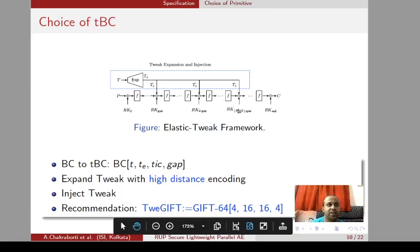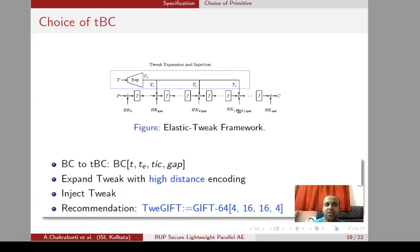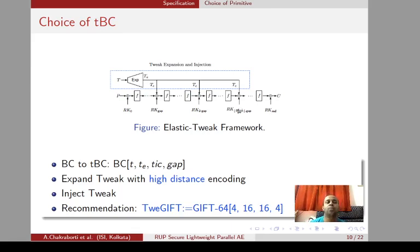Overall the structure is simple, but the main motivation is that we can be more confident in the security of the short-tweak TBC because we are using a well-known block cipher. We can use AES, GIFT, PRESENT, or anything. In that case we will be more confident about the security of the TBC.